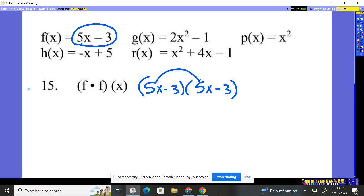So you have to multiply, distribute 5x through to both pieces and the negative 3 through. 5x times 5x, 25x squared.